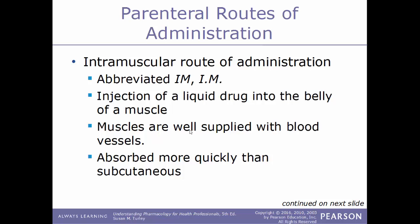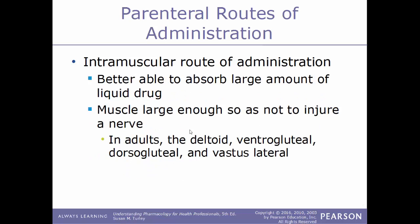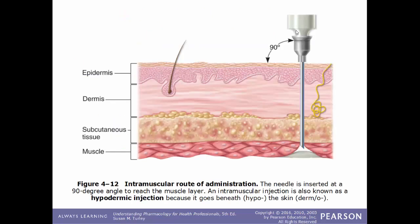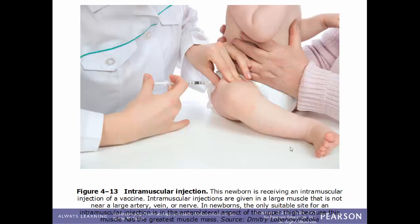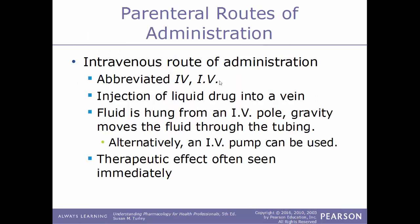The intramuscular route (abbreviated IM) involves injecting a liquid drug directly into the belly of a muscle. Muscles are well supplied with blood vessels so drugs are absorbed much more quickly than via the subcutaneous route. Care must be taken to ensure the muscle is large enough to avoid injuring nearby nerves. Common sites for adults include the deltoid, ventral gluteal, dorsal gluteal, and vastus lateralis. The syringe is held at 90 degrees going straight down into the muscle. For newborns, the only suitable site is the fleshy part of the upper leg.